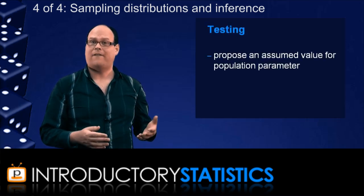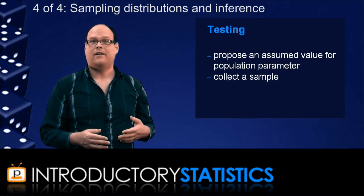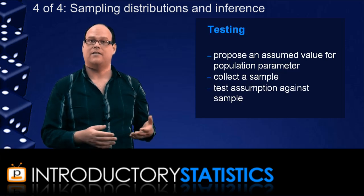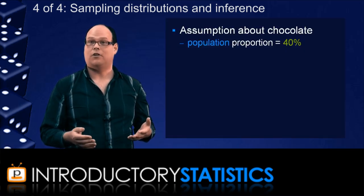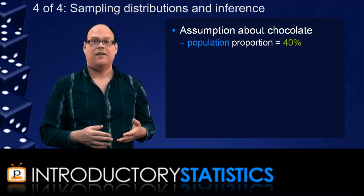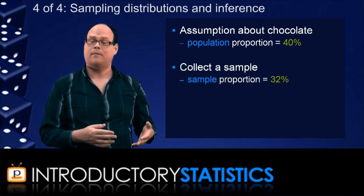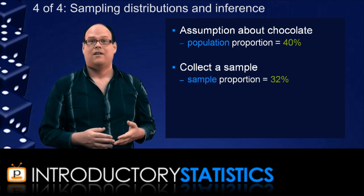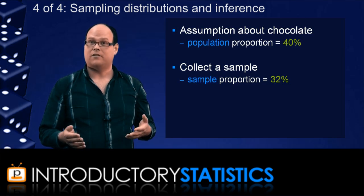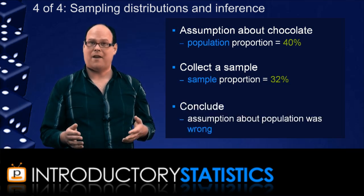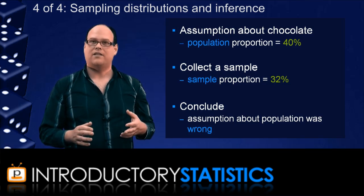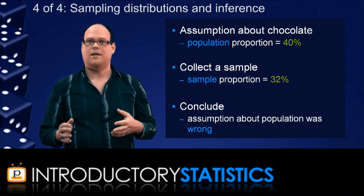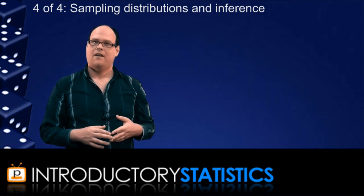In testing, we actually start out with a value for the population parameter, and then collect a sample and test this value against the sample. For example, you might assume that the proportion of people who prefer chocolate ice cream is 40%. But you then collect a sample of people and measure the sample proportion to be 32%. Based on the sampling distribution of the proportion, you conclude that your original assumption about the 40% proportion was probably not right. That is, the sample is used as evidence to test an assumption about the population.